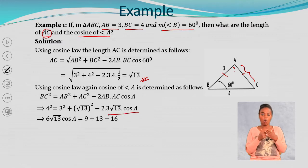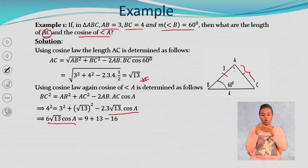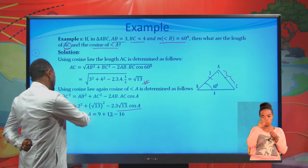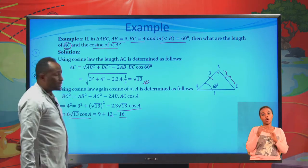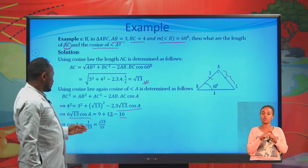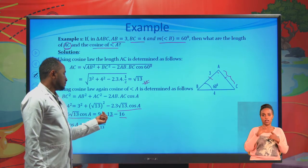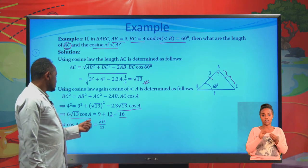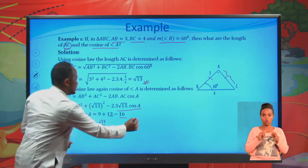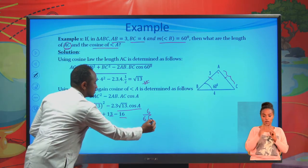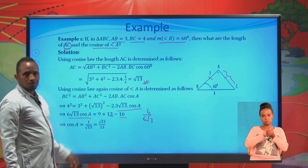This gives us 6 root 13 times cosine A on one side. Shifting terms, 6 root 13 cosine A equals 9 plus 13 minus 16. That gives 9 plus 13 minus 16 equals 6. Therefore, cosine A equals 6 divided by 6 root 13. Cancelling the 6s, you get 1 over root 13.